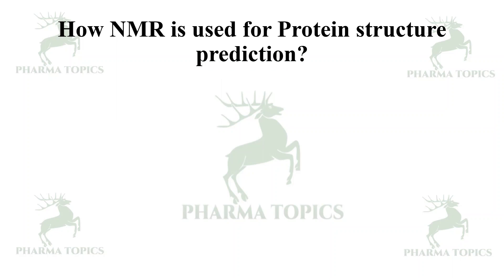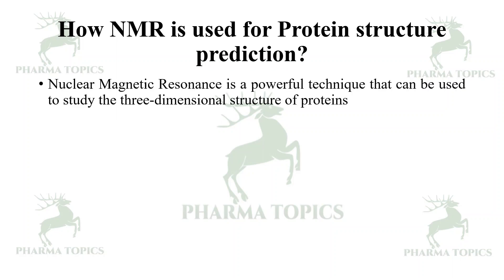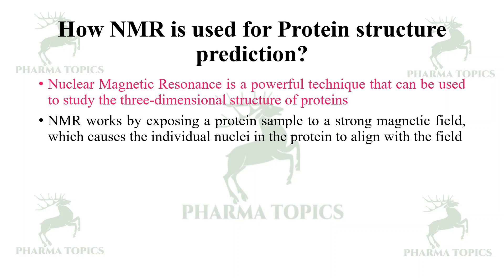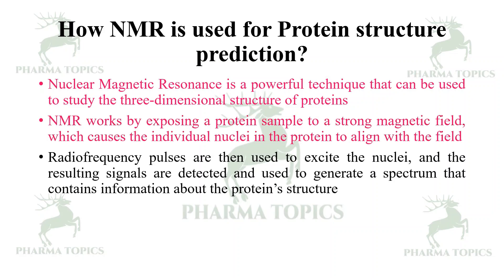How is NMR used for protein structure prediction? Nuclear magnetic resonance is a powerful technique that can be used to study the three-dimensional structure of proteins. NMR works by exposing a protein sample to a strong magnetic field, which causes the individual nuclei in the protein to align with the magnetic field. Radio frequency pulses are then used to excite the nuclei, and the resulting signals are detected and used to generate a spectrum that contains information about the protein's structure.